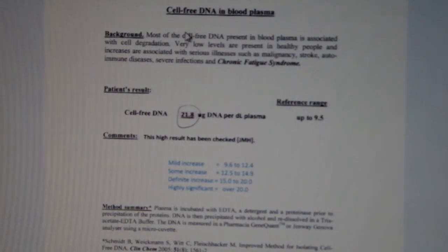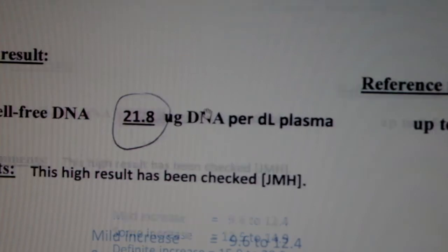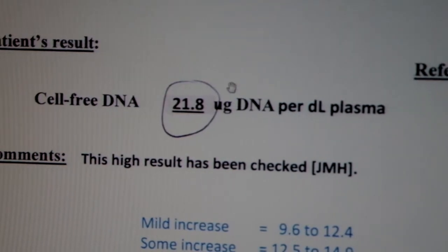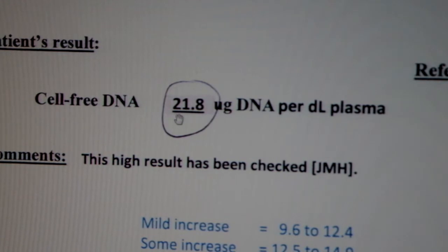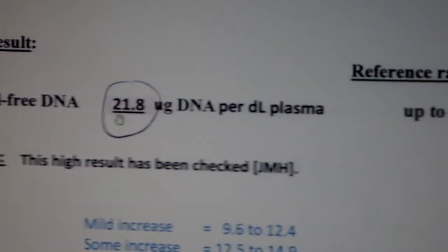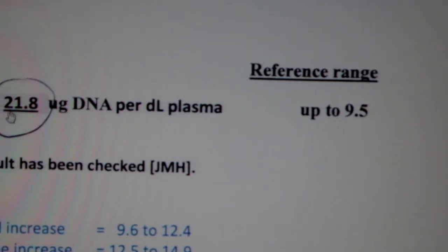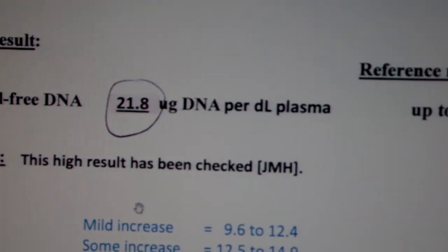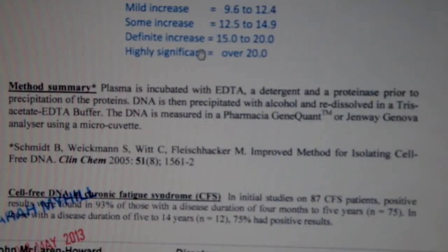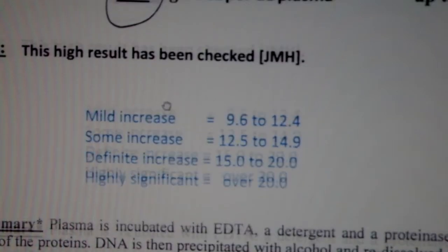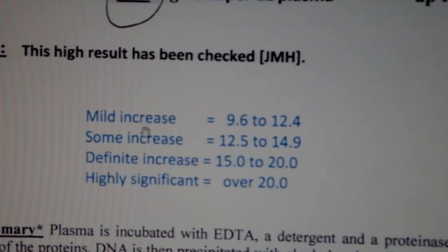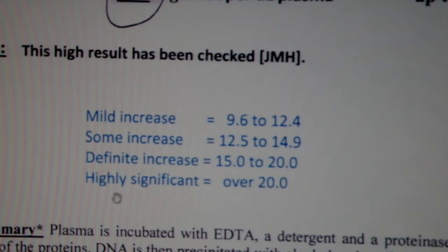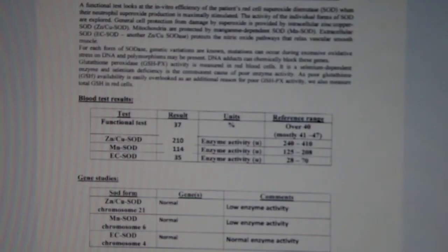This next test is actually pretty interesting — it's cell-free DNA. It's a measure of how many cells in your body are dying as a result of the low energy state. The value is 21.8 and the reference range is up to 9.5 — that's DNA in plasma. Looking at the scale: mild increase, some increase, definite increase, highly significant. I fall into highly significant.